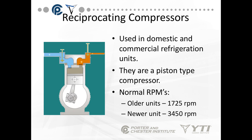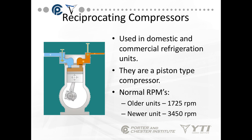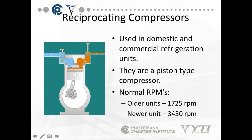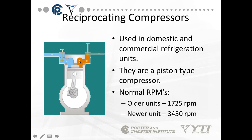The most common type of compressor in refrigeration right now is the reciprocating compressor. It's used in domestic and commercial refrigeration systems. They are piston types — older units operate at 1725 RPM, newer units at 3450 RPM. The piston moves on an off-center rotor with reciprocating action. On the downward stroke, the suction valve opens; on the upward discharge stroke, the discharge valve opens and then re-closes to prevent refrigerant from coming back into the chamber.